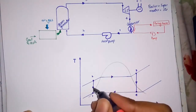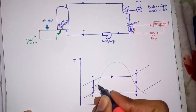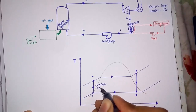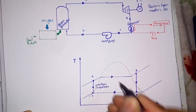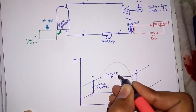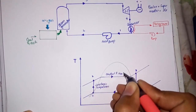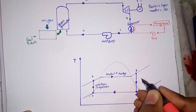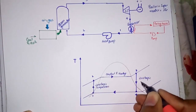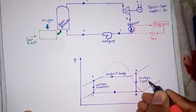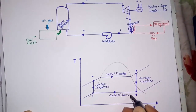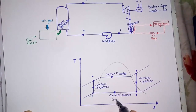Process one to two is isentropic compression, process two to three is constant pressure heating, process three to four is isentropic expansion, and process four to one is constant pressure condensation.